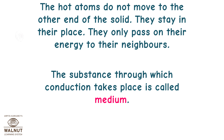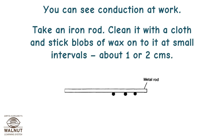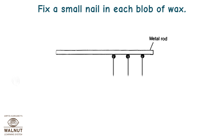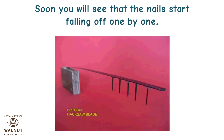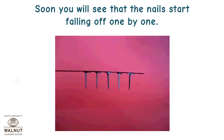The substance through which conduction takes place is called the medium. You can see conduction at work: take an iron rod, clean it with a cloth, and stick blobs of wax onto it at small intervals of about one or two centimeters. Fix a small nail in each blob of wax. Hold one end with a cloth and hold the other end over a candle flame. Soon you will see that the nails start falling off one by one.